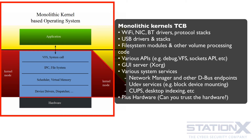If security bugs or compromises occur inside the trusted computing base, it is very likely to jeopardize the security of the entire system. Vulnerabilities in the kernel are especially dangerous, so avoiding kernel vulnerabilities is especially critical. These make up the attack surface of a monolithic kernel. The smaller the trusted computing base, the better for security — the smaller the attack surface. So why is this relevant to Qubes?